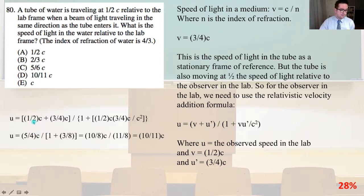So, u equals 1 half c plus 3 fourths c, that whole quantity divided by the quantity 1 plus 1 half c times 3 fourths c, that quantity divided by c squared. So u is going to equal 5 fourths c, that quantity divided by the whole quantity 1 plus 3 eighths, that is going to equal 10 over 8c, 10 over 8 times c, divided by 11 divided by 8, that is going to equal 10 over 11c, and that is going to lead us inevitably to answer D.